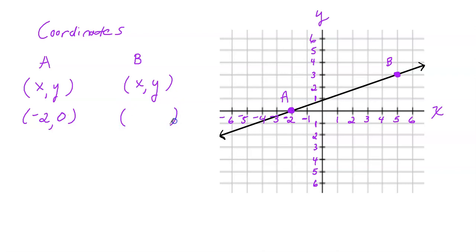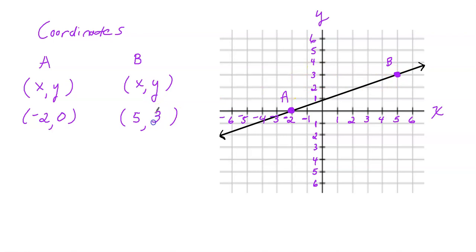For the coordinate of B, I'd have to move from the origin five units horizontally to the right, and then three units up vertically. So my x value is five and my y value is three. The coordinate of B is five, three.